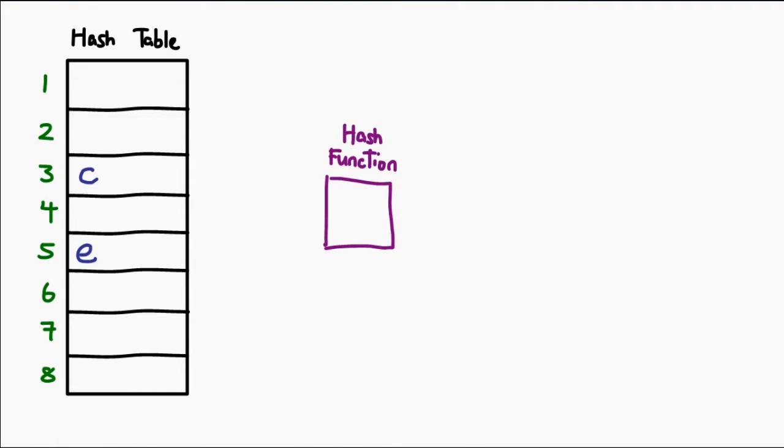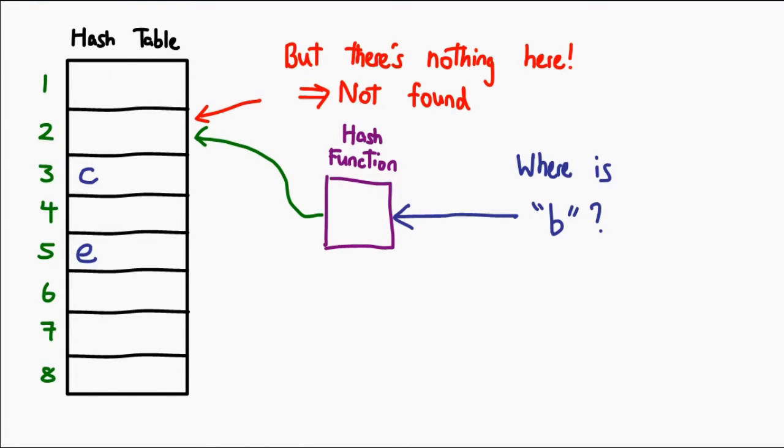Now, how about a situation whereby we actually search for something that doesn't exist? I'm going to tell the hash function, hey, where's the position of B? And it's going to tell me it's at position 2. I'm going to go to position 2 of the hash table and realize it's empty. As a result, I can be sure that B isn't actually in the list, and I will return a not found.